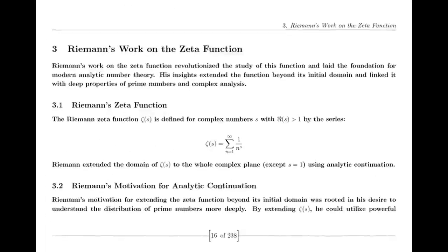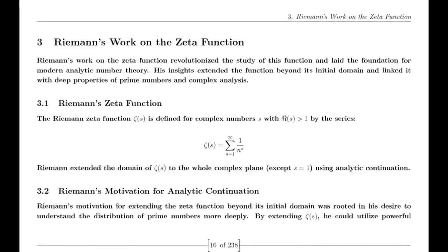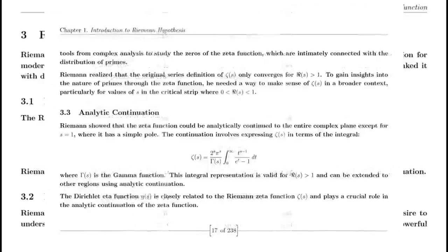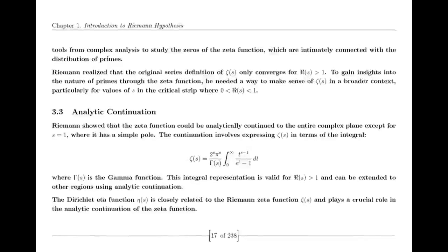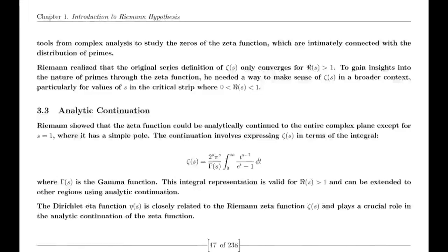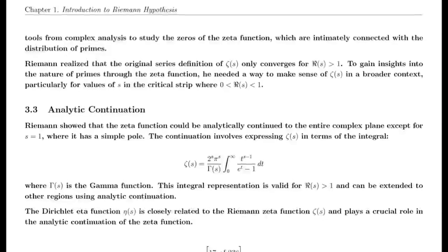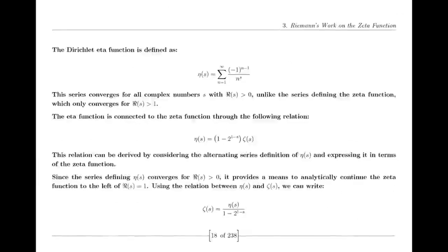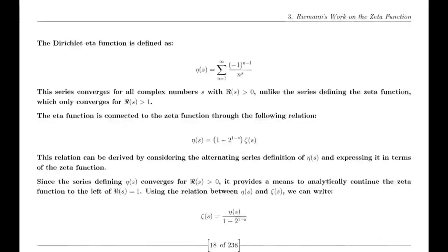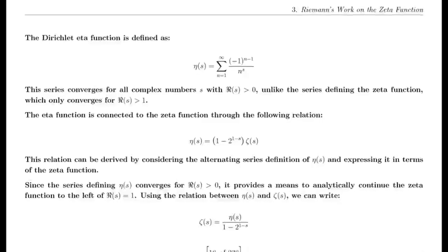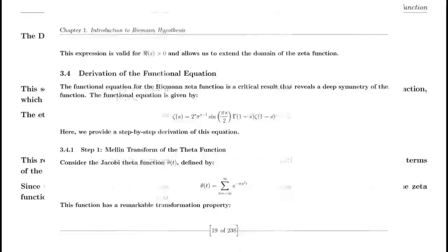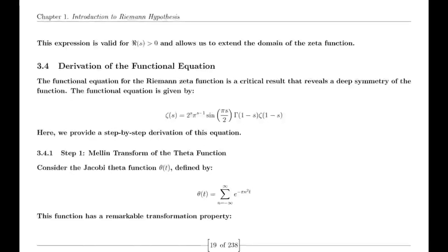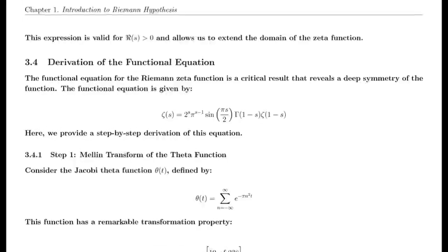Finally, we address the Riemann hypothesis itself. Riemann proposed that all non-trivial zeros of the zeta function lie on the critical line where the real part of s is one-half. This hypothesis has profound implications for number theory, particularly in understanding the distribution of prime numbers. Despite extensive numerical evidence supporting the hypothesis, a formal proof or disproof remains one of the greatest challenges in mathematics.